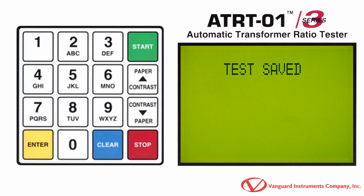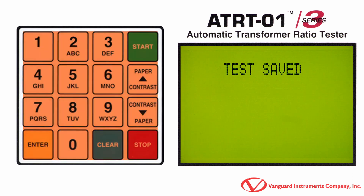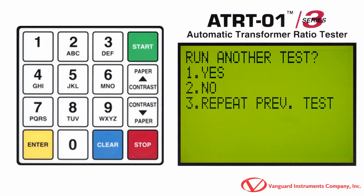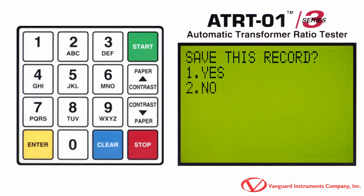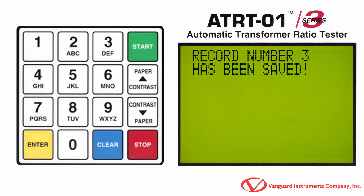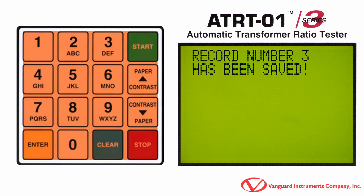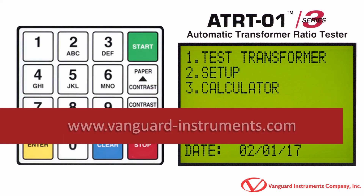Press the 1 key to save the readings. Press any key to continue. Press the 1 key if you'd like to perform another test. For this example, we'll press the 2 key for no. Press the 1 key to save the test record to the unit's internal memory and then press any key to return to the main menu.